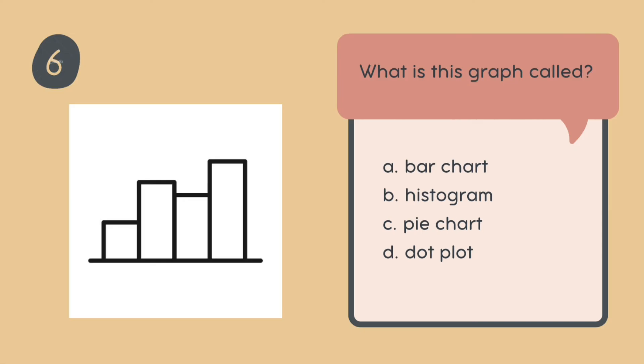So what is this graph called? Similar to the previous one, this graph is also a bunch of rectangles of different sizes. Some are taller, some are shorter that is clubbed together. So what would this be called? Is it a bar chart? Is it a histogram? Is it a pie chart? Is it a dot plot? I can't see any dots over here. So maybe we can roll out dot plot. Oops, did I just give you a hint? No worries. So I hope you got the answer for this. If not, pause the video. Once you are done, play it back.